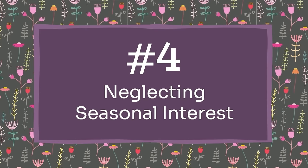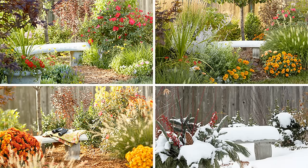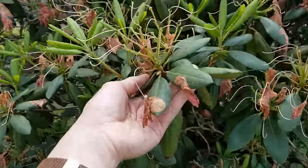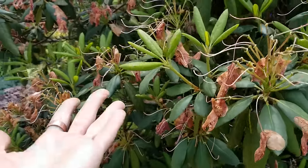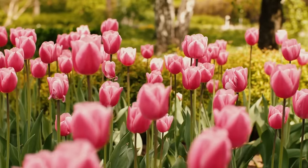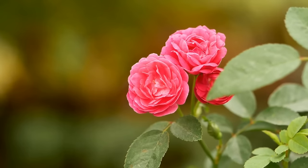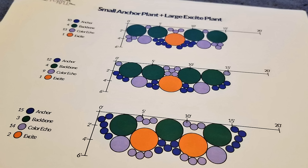Mistake number four is not planting for four seasons of interest. This is super common — when you're not considering all of the different seasons where plants bloom, you can end up with a garden that looks great in one season and then sort of falls off and looks meh the rest of the year. Most perennial plants and shrubs have bloom times; some only bloom for two or three weeks, and if you're lucky you can get some that'll bloom for six or eight weeks.